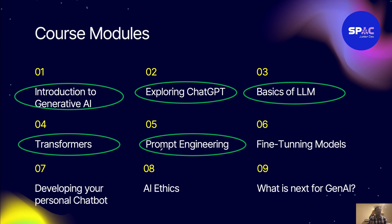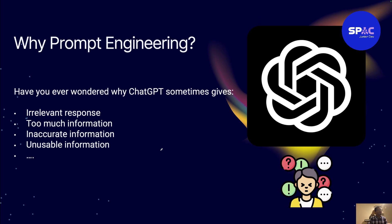Today we are learning about prompt engineering — we want to know how to ask good questions and have good conversations with AI so we can get good responses. So why do we need prompt engineering? Have you ever wondered why sometimes when you have a conversation with ChatGPT it gives you irrelevant responses, sometimes too much information, sometimes inaccurate information?